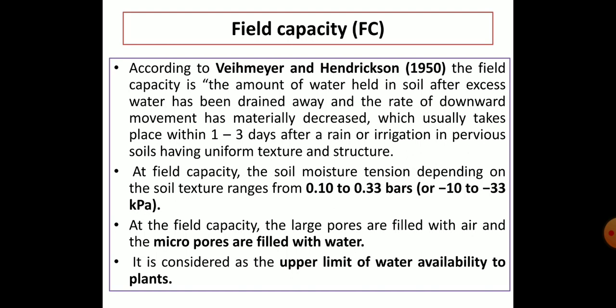Field capacity can be achieved after 1 to 3 days of rain or irrigation. At field capacity, the soil moisture tension, depending on soil texture, ranges from 0.1 to 0.33 bars, or minus 10 to minus 33 kilopascals. At field capacity, all the macropores are filled with air — gravity has drained the macropores — and only the micropores are filled with water. This is the key point to stress on.